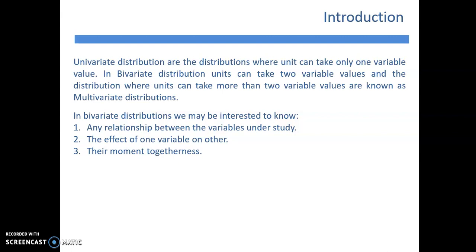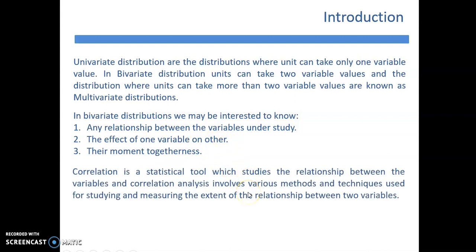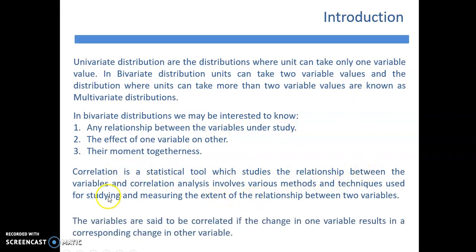Bivariate means two variables, and more than two becomes multivariate. We study these distributions because we want to identify the relationship between variables, understand the effect of one variable on another, or understand their movement together — whether they move in the same direction, opposite direction, and what kind of change in one variable is caused by another variable.